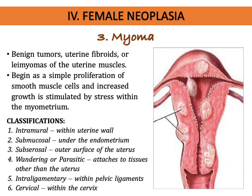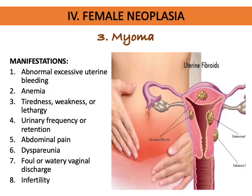Other classifications include intraligamentary (within the pelvic ligaments) and cervical (within the cervix). Manifestations of myoma include abnormal excessive uterine bleeding leading to anemia, feelings of tiredness and lethargy, urinary frequency or retention as the myoma enlarges, localized abdominal pain, dyspareunia, foul or watery vaginal discharge, and sometimes infertility.